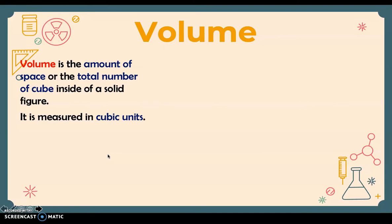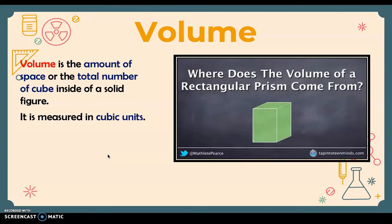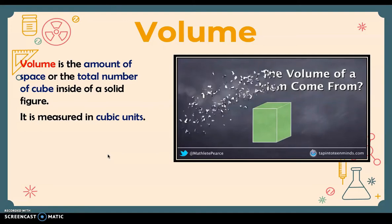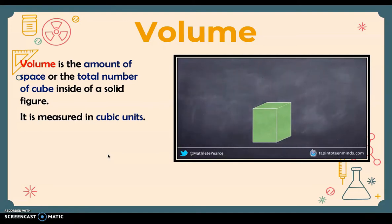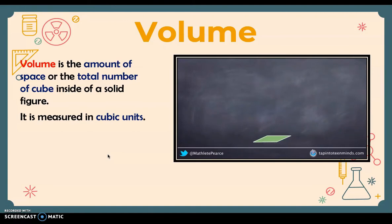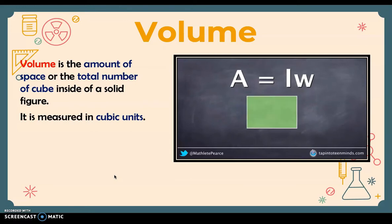Now let's watch this video on where the volume of a prism comes from. In this video we're going to discover where the formula for finding the volume of a rectangular prism comes from. As we did with the formula for volume of a cylinder, we're going to peel away the sides and focus on the base. Since our base is a rectangle, we're going to look at the area of that base, which is length times width.